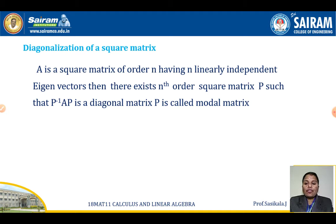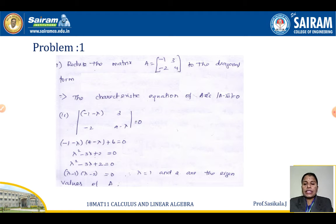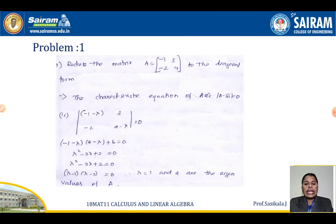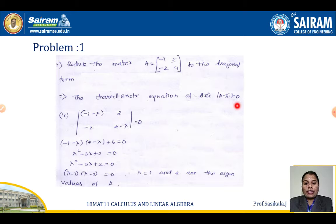We will go through an example to understand the diagonalization of a square matrix. The question is: reduce the matrix A = [[-1, 3], [-2, 4]] to diagonal form. The characteristic equation, which we use to find the eigenvalues and eigenvectors, is det(A - λI) = 0.